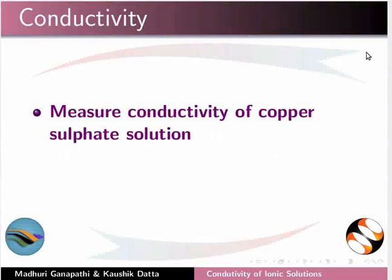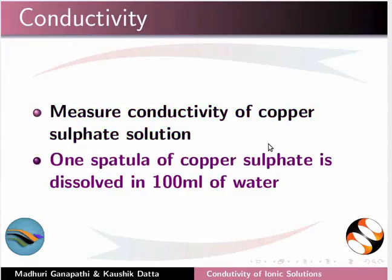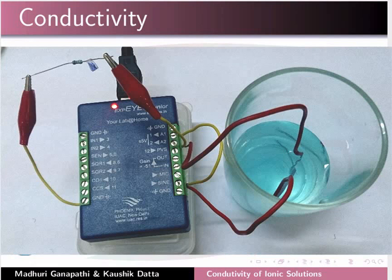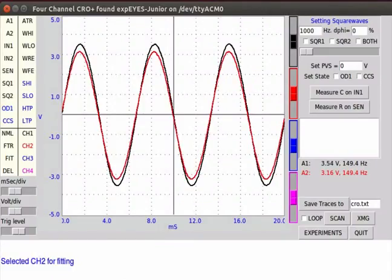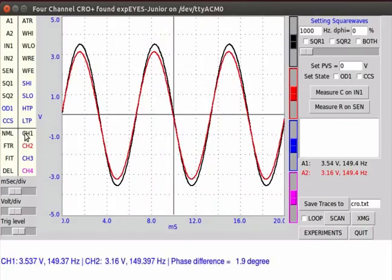Now we will measure conductivity of copper sulfate solution. To make the solution, one spatula of copper sulfate is dissolved in 100 ml of water. In the same connection, wires from sine and A2 are dipped in the copper sulfate solution. On the plot window, we can see the conductivity curve. Red trace is conductivity of copper sulfate solution. Increased conductivity is due to copper and sulfate ions present in the solution. Observe the voltage and frequency values on the right.